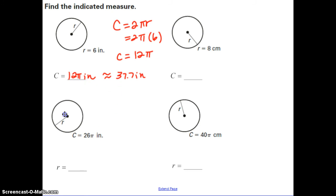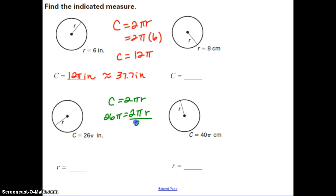In this bottom example, we're given a circle where the circumference equals 26π inches. We start with the same formula C = 2πr, substituting 26π for C. To isolate the variable r, divide both sides by 2π. The pi's and 2's cancel out, leaving r on the right side, and 26 divided by 2 gives us 13. So the answer is r = 13 inches.